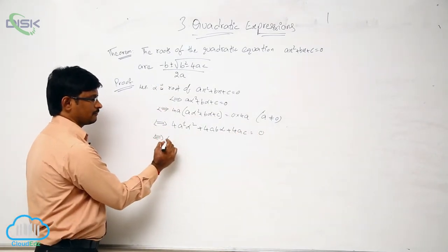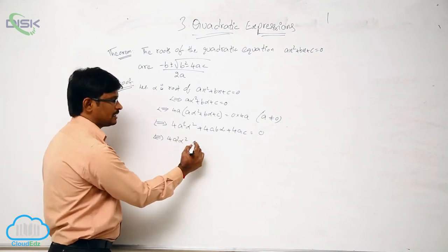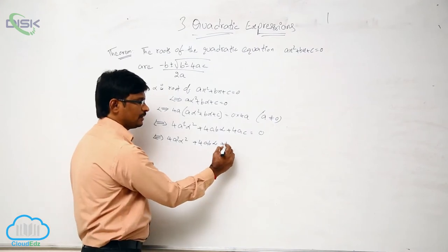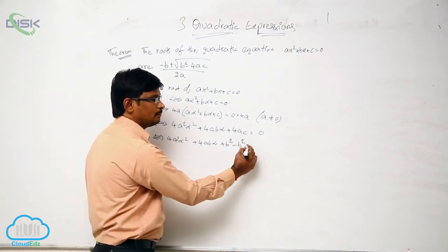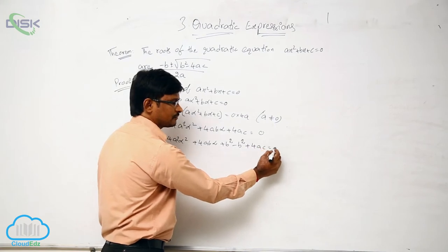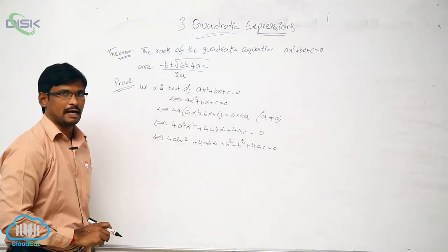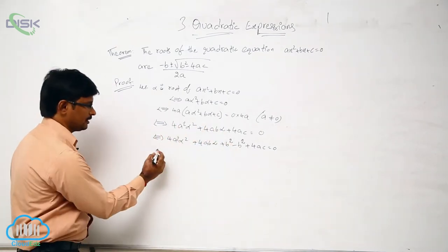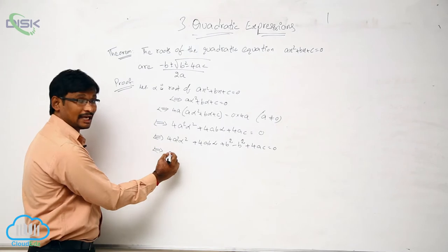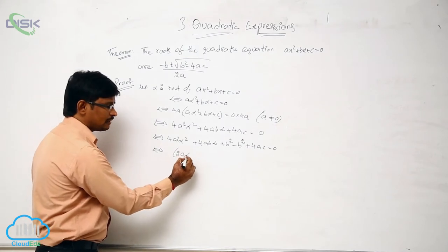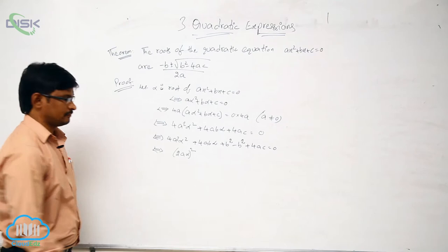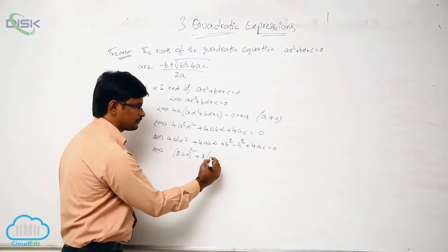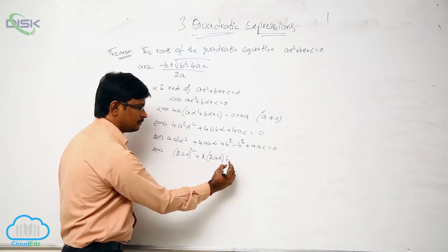Now we have 4a²·alpha² + 4ab·alpha. What we do next is add and subtract B² on the left-hand side — adding and separating B². Since we're both adding and subtracting B², nothing will change. We can write 4a²·alpha² as (2a·alpha)², and 4ab·alpha as 2·(2a·alpha)·B.